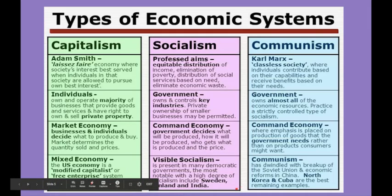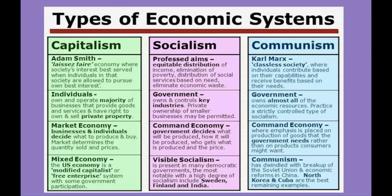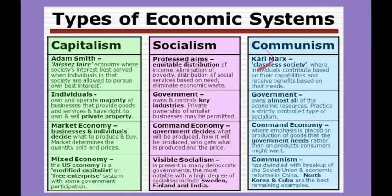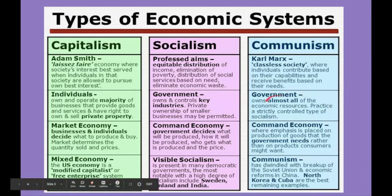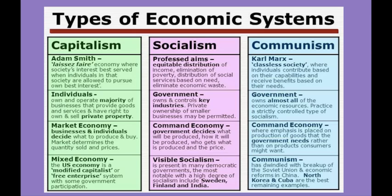Visible socialism is present in many democratic governments, with high degrees seen in places like Sweden, Finland, and India. Communism is what Karl Marx proposed — a revolution moving from capitalism all the way to communism. His society would be classless, meaning everybody is exactly the same. People contribute based on their abilities and receive based on their needs — nobody is rich, nobody is poor. The government owns almost everything in a strictly controlled command economy, deciding what is produced rather than consumers. Communist countries are fewer today, but North Korea and Cuba remain as examples.